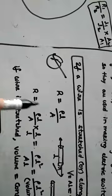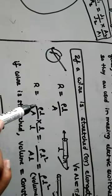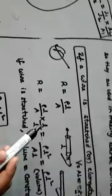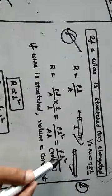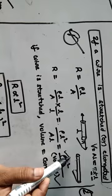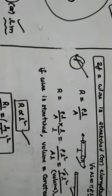Now, R equal to rho L by A. When length changes, multiply and divide by L: you get rho L squared divided by (area times length). Area times length is volume. So R equals rho L squared by volume. Since volume and resistivity are constant, resistance is proportional to L squared.